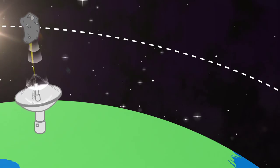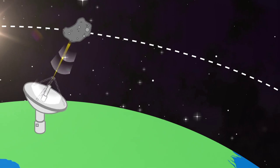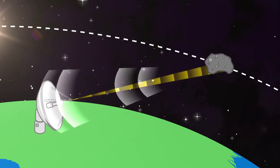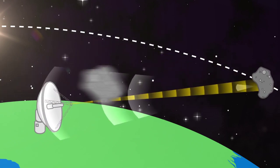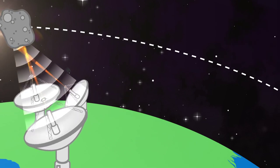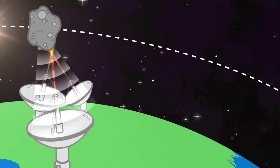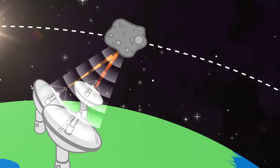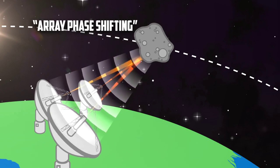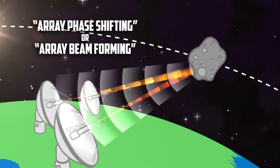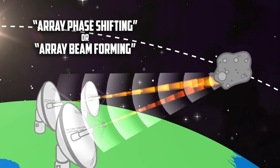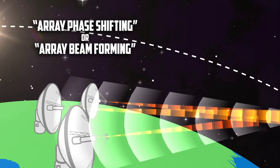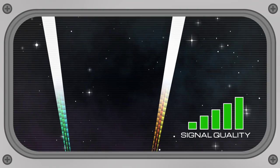Alone, a single radar can struggle to accurately track an object in space. To more effectively track something, radar dishes can work together by forming subarrays with combined beams. This process, called array phase shifting or array beam forming, ensures that we get the optimal signal back with the most accurate data possible.